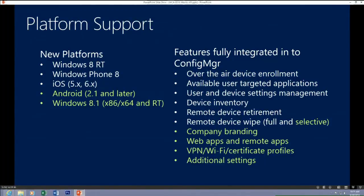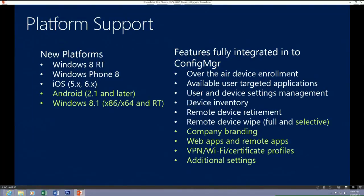For platform support: the ones in white were provided in SP1 shipped December/January. The ones in yellow are shipping with Configuration Manager R2, available later this year — the preview is now available this week for download. SP1 included Windows 8 RT, Windows Phone 8, iOS 5 and 6, some Android support. R2 adds native Android for 2.1 and above, and supports Windows 8.1 in x86, x64, and RT.